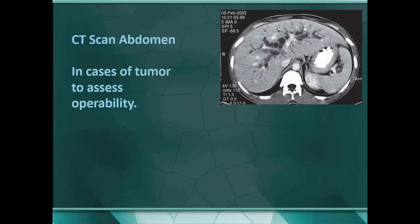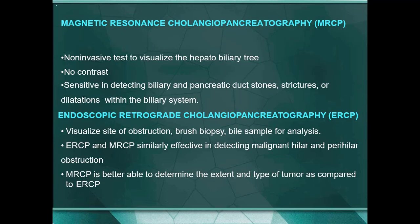CT scan of the abdomen is used when you suspect the cause is not stone but malignancy — to stage the disease and assess operability, that is whether surgery is possible or not.